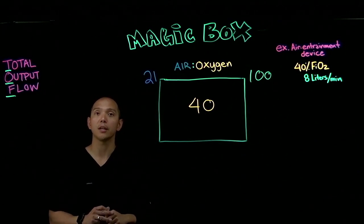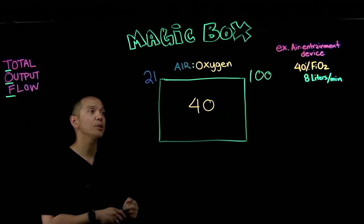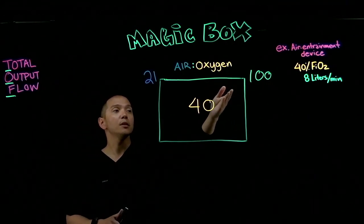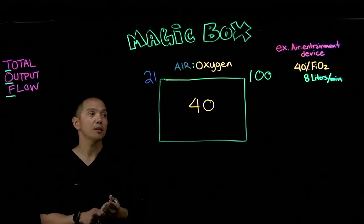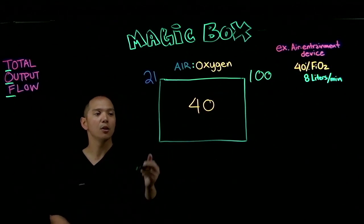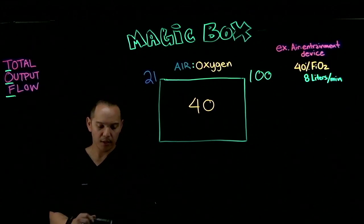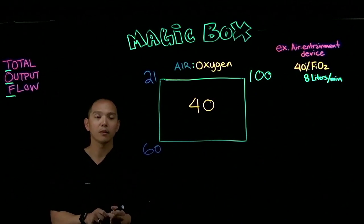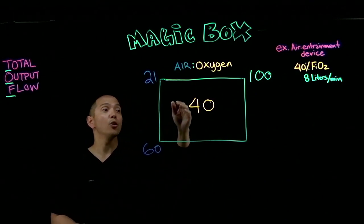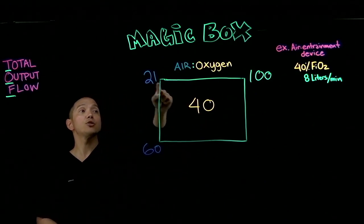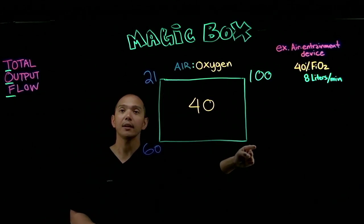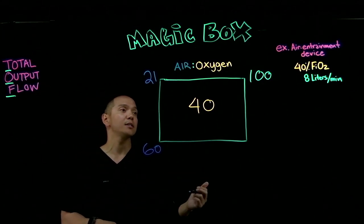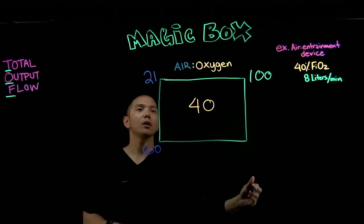Now we do the cross math. We go 100 minus 40, which gives us 60. Then from the other side, we go 40 minus 21, and that gives us 19. So we write 60 on one side and 19 on the other.